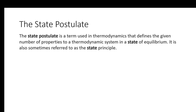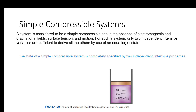The state postulate says that in order to describe a system in equilibrium, you only need a finite number of properties. For a simple compressible system — in the absence of other effects like fields, surface tension, and motion — two independent intensive properties are sufficient. In this case, temperature and specific volume are enough to fully describe the state of the system.